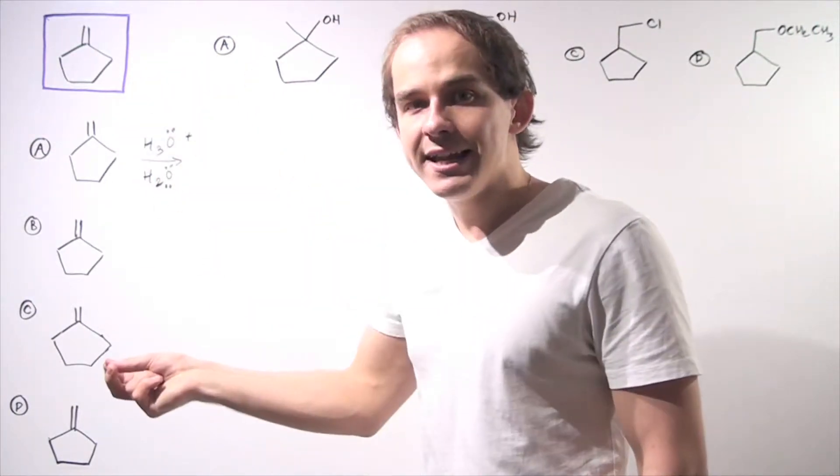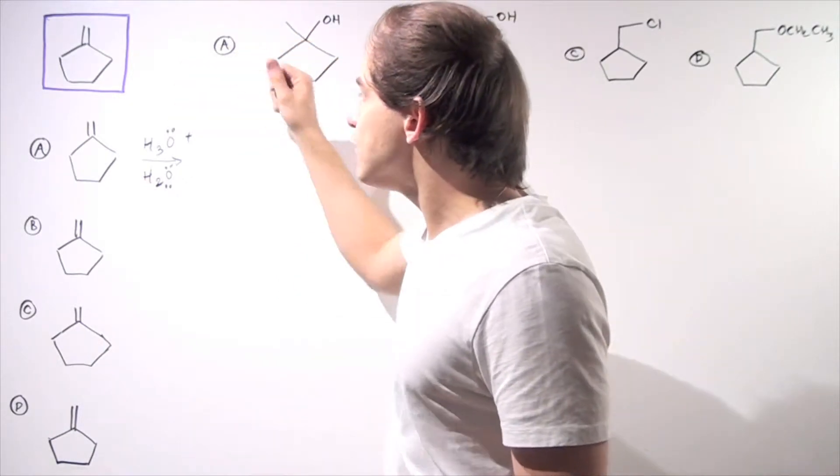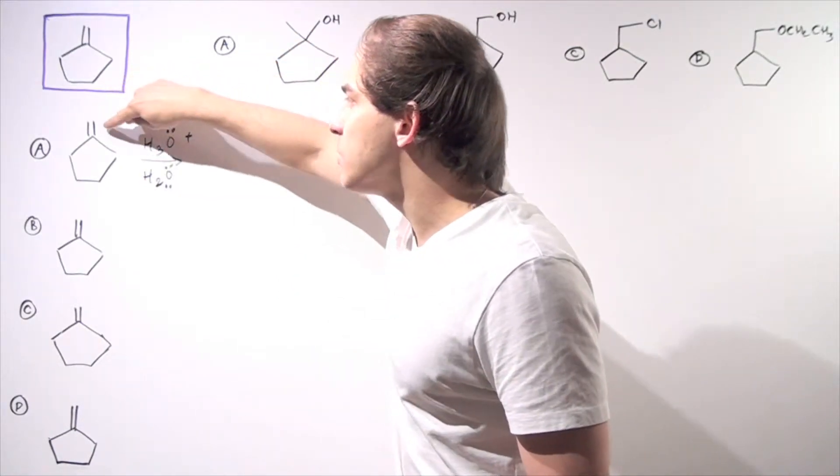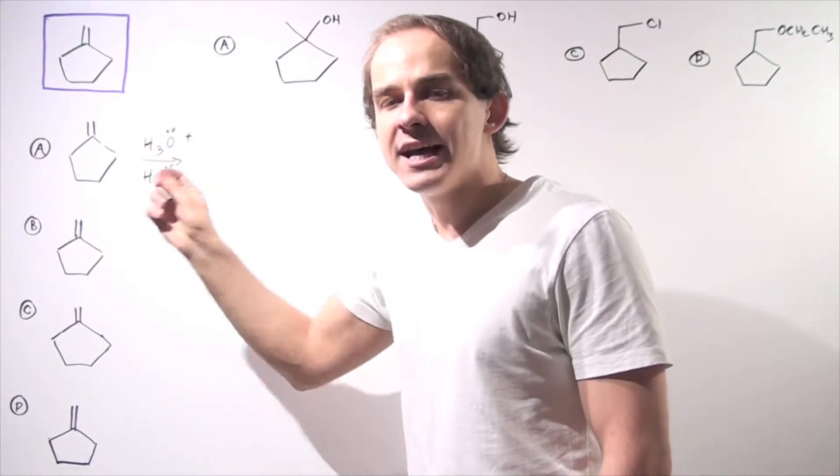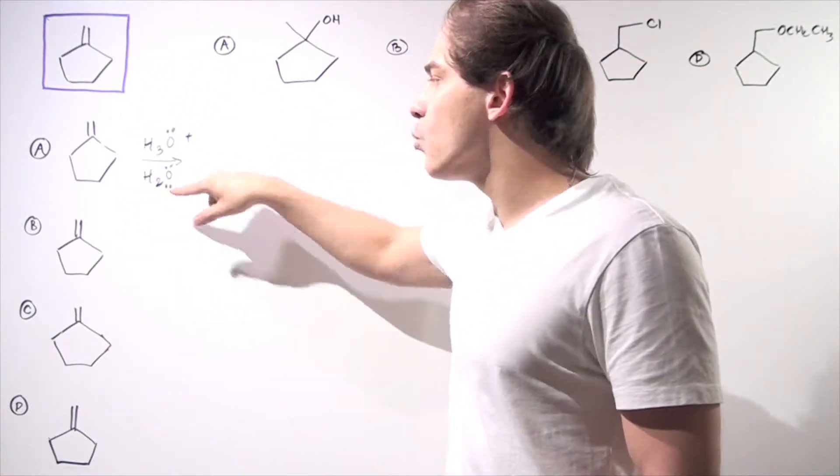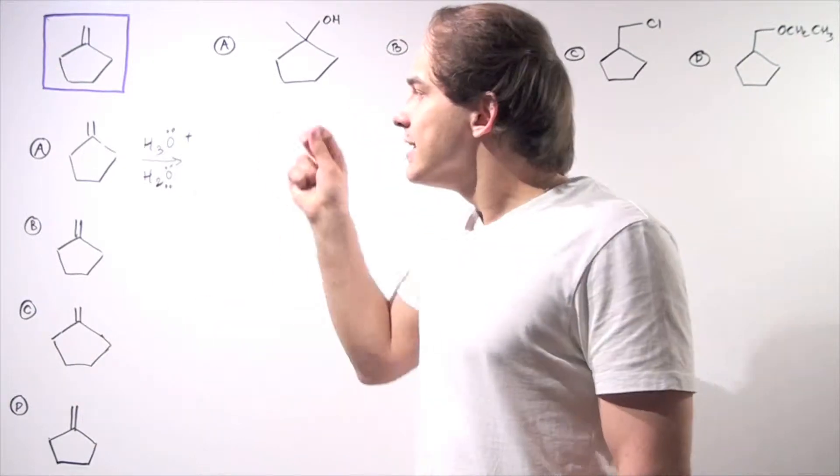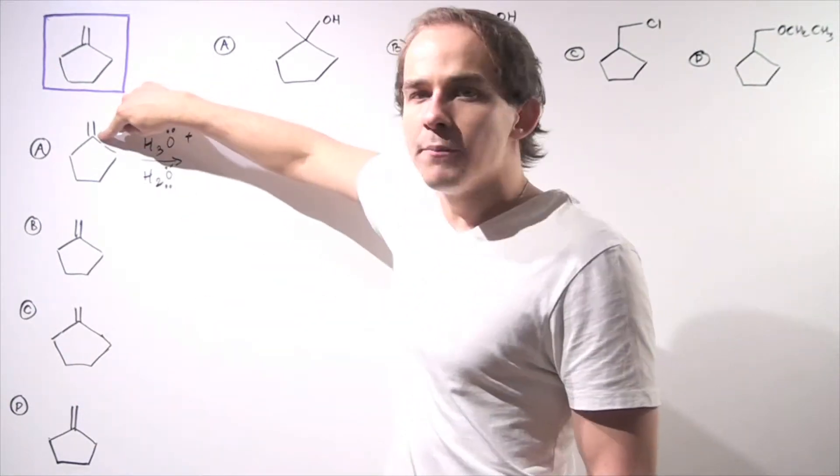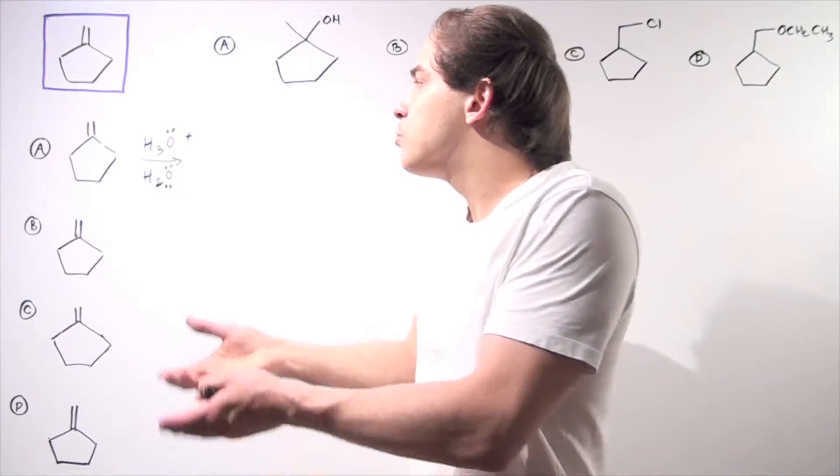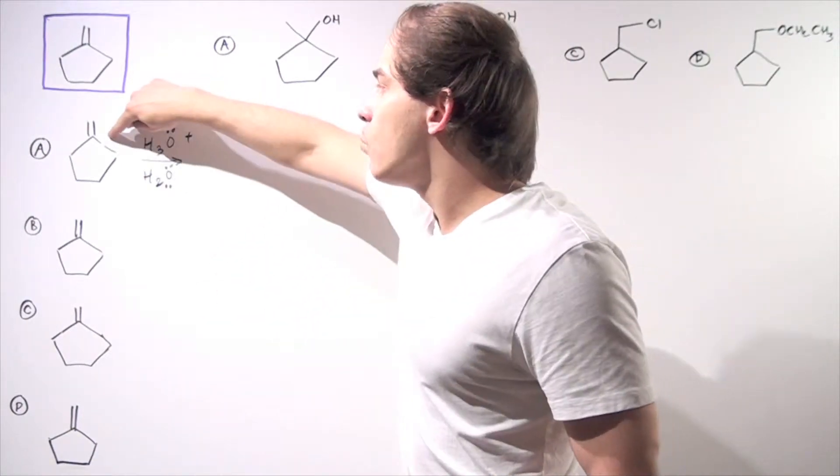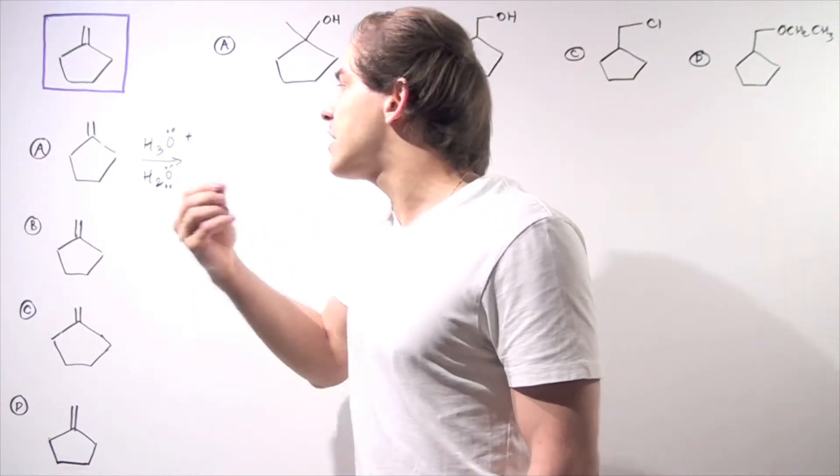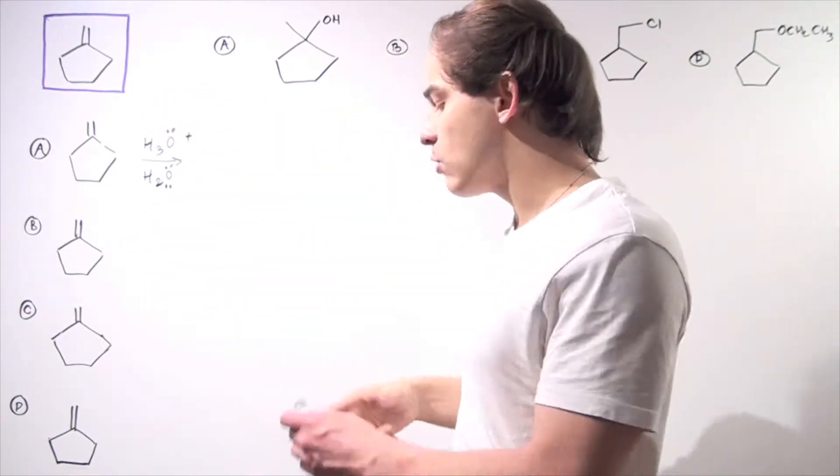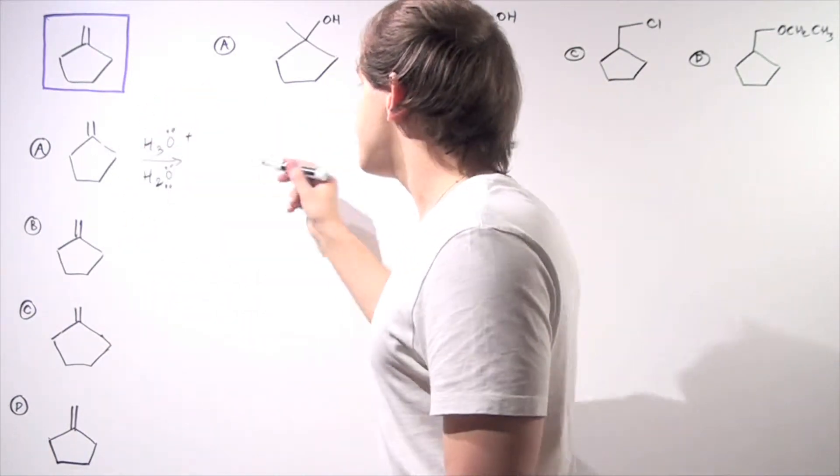In the first step, the alkene is protonated - the H goes onto this carbon to produce the more stable tertiary carbocation. In the second step, water acts as a nucleophile, attacking this carbocation. In the final step, we deprotonate that water group, forming our hydroxide and regenerating our hydronium acid.